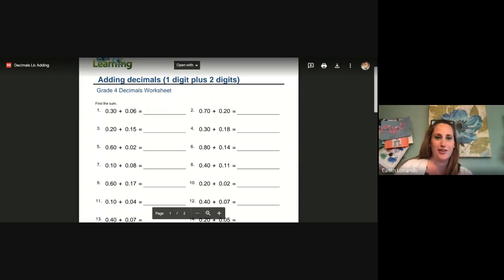Let's go on and do five and six. So, five says 60 hundredths plus two hundredths. Six says 80 hundredths plus 14 hundredths. Go ahead and solve our two problems. Regroup if needed. For number five, we should have 62 hundredths. For number six, we should have 94 hundredths. Easy, easy, easy.